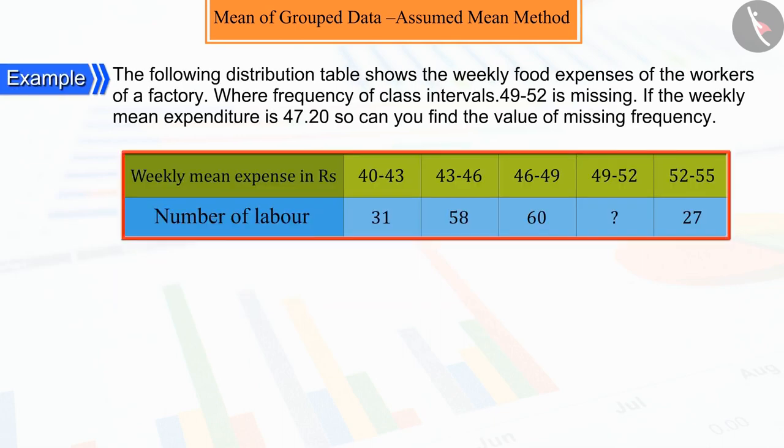The following distribution table shows the weekly food expenses of workers of a factory, where the frequency of class interval 49 to 52 is missing. If the weekly mean expenditure is 47 rupees 20 paise, can you find the value of missing frequency?